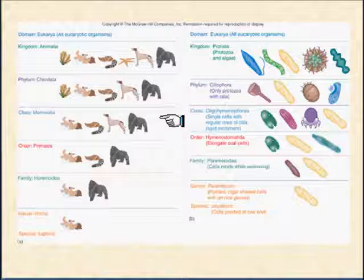We are the phylum Chordata because we have a spinal cord. The class is Mammalia because we are warm-blooded and feed babies breast milk. We are of the order Primates in that we have basically hand-like structures like raccoons and great apes. The family Hominidae, we have the genus Homo — which includes Homo erectus, Homo habilis — and then we are the species sapiens.